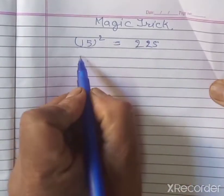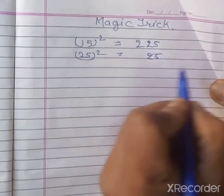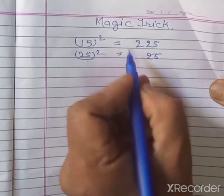For 25 squared, we write 25, then 2's successor is 3, so 2 times 3 equals 6, giving 625. For 35 squared, we write 25 and 3 times 4 equals 12, giving 1225.